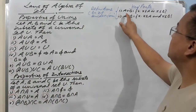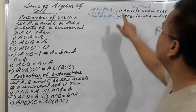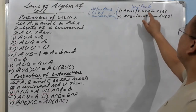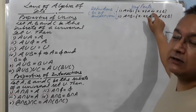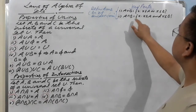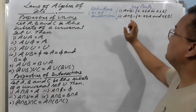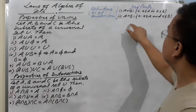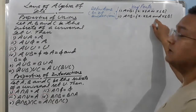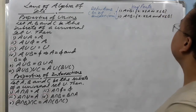The definitions in set builder form: A union B is equal to {x such that x belongs to A or x belongs to B}. Here you cannot write 'and' — if you write 'and' then it is absolutely wrong, it must be 'or'. A intersection B is equal to {x such that x belongs to A and x belongs to B}. In the case of intersection, write 'and', do not write 'or'. These two are the key points.